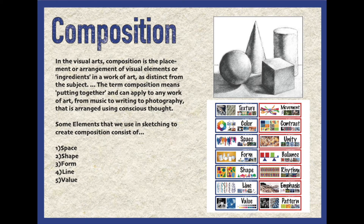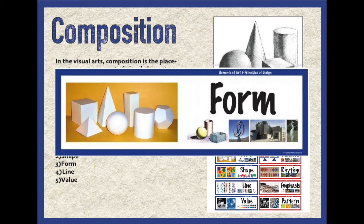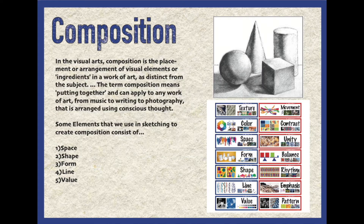First, we want to look at what composition actually means. This is a word you have probably seen before in other subjects, such as writing or in music. A composition is something that you consciously create using specific elements or principles of a given subject. Some elements of art that you would use and want to be aware of when you sketch are shape, line, value, form, and space. Other elements include texture and color, but we will not be using those in this lesson.